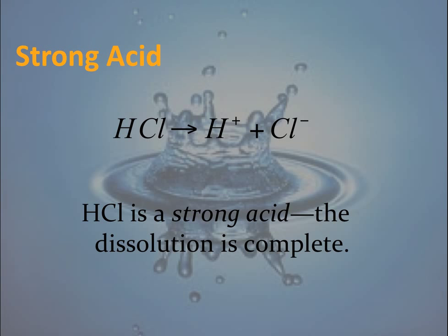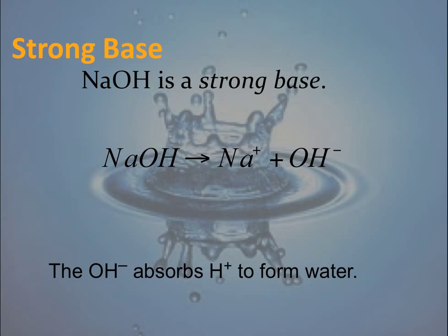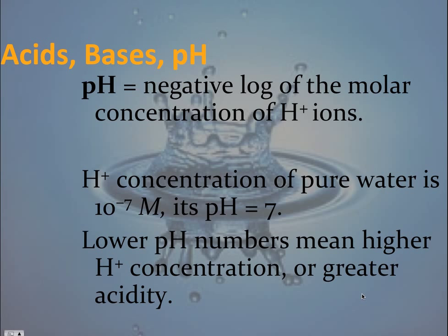Looking at examples of strong and weak acids and bases: hydrochloric acid (HCl) is a strong acid, meaning its dissociation in a polar solution is complete. More organic acids with carboxyl-type groups are considered weak acids, so not all molecules dissociate completely into their ionic states. Strong bases such as sodium hydroxide completely dissociate in water solvents. Weak bases include bicarbonate, ammonia, and molecules with amino groups.